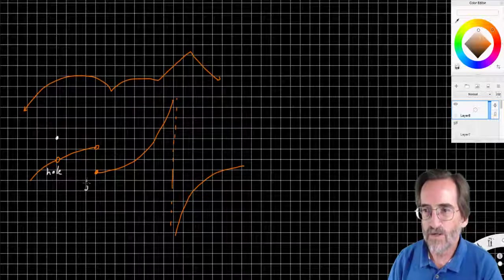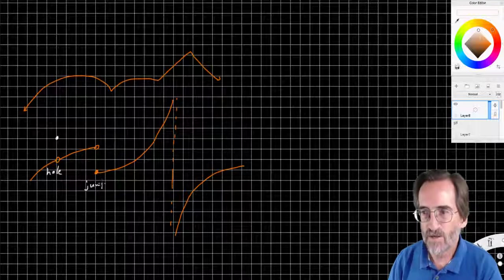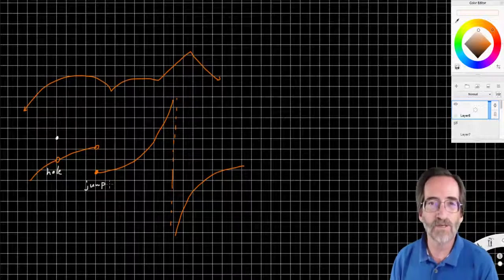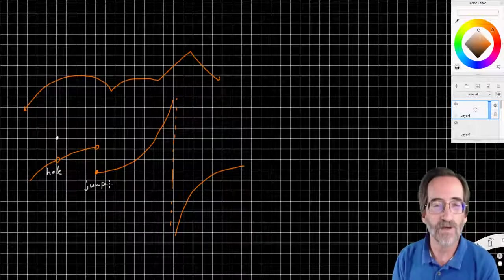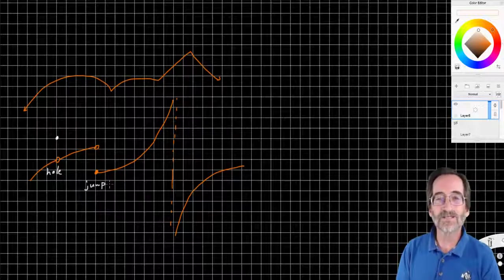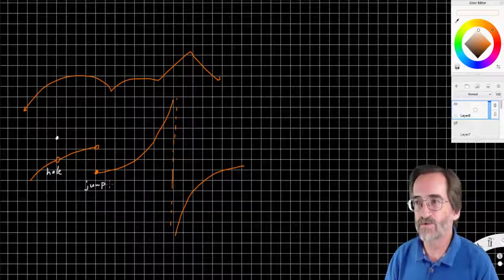There can be a jump discontinuity. That is where it's approaching one value, and then suddenly it changes. That happens with things like absolute value, the floor function, or the ceiling function, or the int function, the greatest integer function.